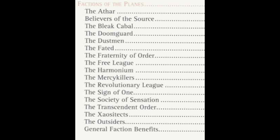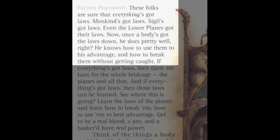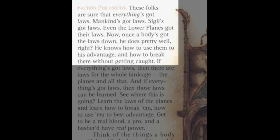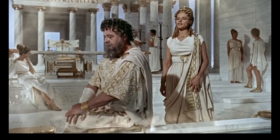We can see many links between strange factions in Planescape and real-world philosophies, such as the Fraternity of Order, whose philosophy in the campaign setting is described as follows: 'These folks are sure that everything's got laws. Mankind's got laws, Sigil's got laws, even the lower planes got their laws. Once a body's got the laws down, he does pretty well — he knows how to use them to his advantage, and how to break them without getting caught.' They can be compared to sophists from ancient Greece, and in a modern-day context, one could argue that some lawyers practice the sophist philosophy, manipulating laws to fit their own will.